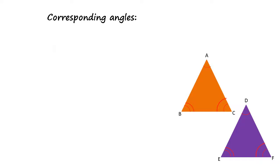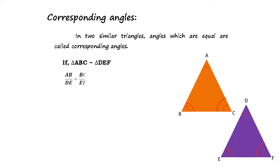Corresponding Angles. In two similar triangles, angles which are equal are called corresponding angles. If triangle ABC is similar to triangle DEF, AB divided by DE is equal to BC divided by EF is equal to CA divided by FD.